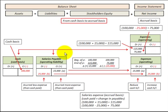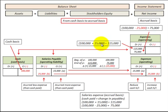Let's go through a T-account showing how to convert from a cash basis to an accrual basis. For example, we had a $15,000 increase in salaries payable for the year and paid $100,000 for salary on a cash basis. We'd have a credit for $100,000 plus a credit to salaries payable for $15,000, and then a debit balance to expenses of $115,000 — that is our accrual basis salary expense for the year.